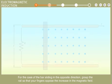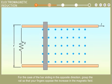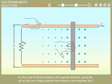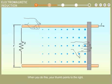For the case of the bar sliding in the opposite direction, grasp the rail so that your fingers oppose the increase in the magnetic field. When you do this, your thumb points to the right. Therefore, the induced current travels clockwise.